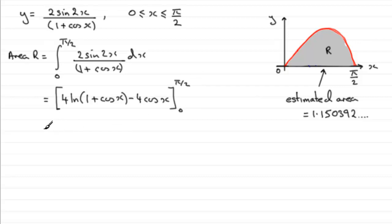So what we need to do now is just substitute our limits in. If we put π/2 through first of all we get 4 times the natural log of (1 + cos(π/2)), and the cos(π/2) is going to be 0. So you've got the natural log of 1, and the natural log of 1 is 0, so that term is going to go out.